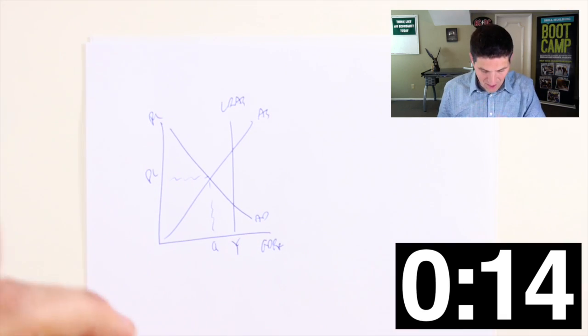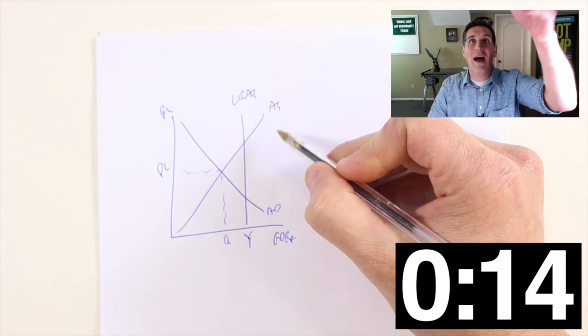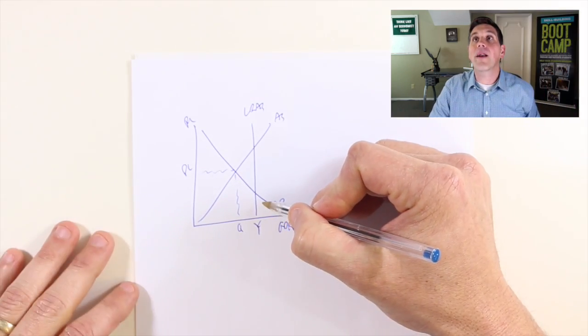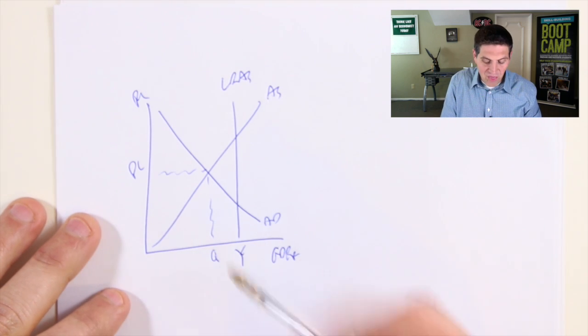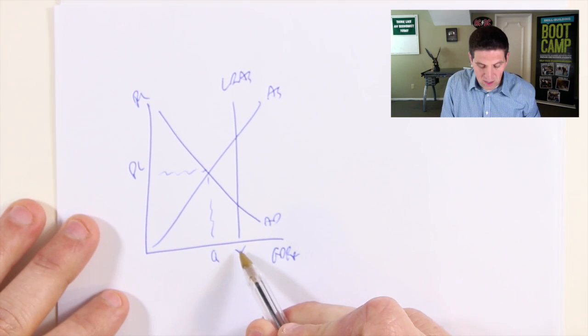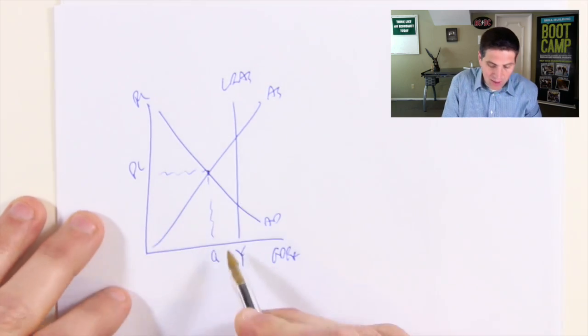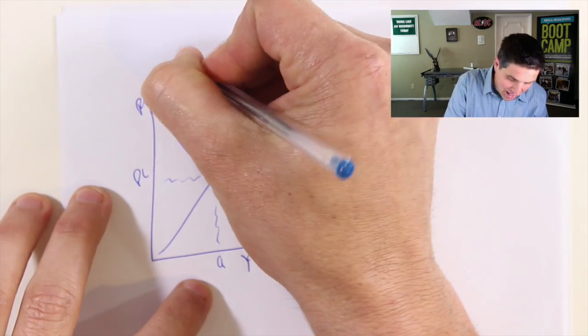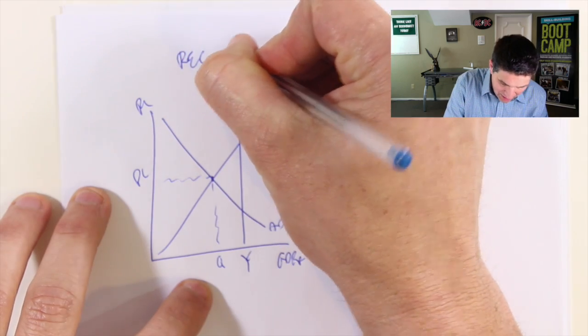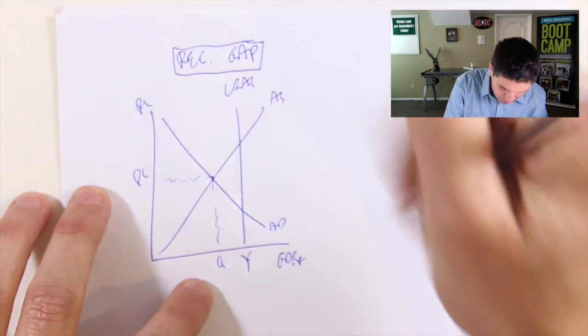We've got GDP, real price level, aggregate demand, aggregate supply. We're currently right here on the quantity and price level. Long run aggregate supply with the Y right there. Done. How'd you do? Did you beat me? Notice the long run aggregate supply has to be over to the right. This is where we want to be, where full employment would be at Y, and we are currently producing here, which is less than full output. This is the idea of a recessionary gap.